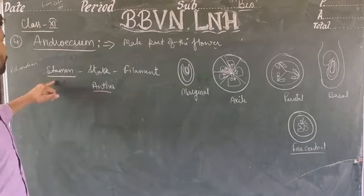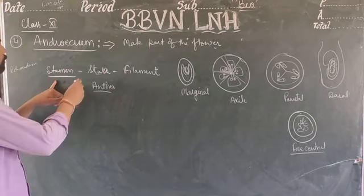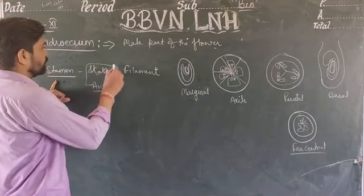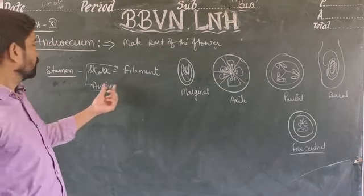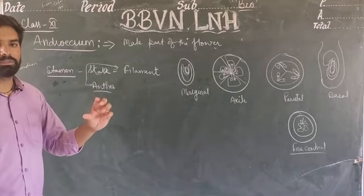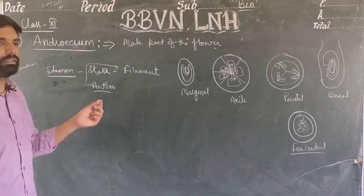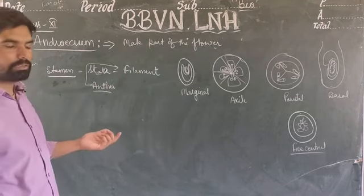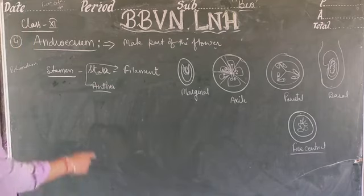So in summary, stamens are the male part of the flower. They have two parts: the stock-like structure called the filament, and the anther. The anther consists of pollen grains.